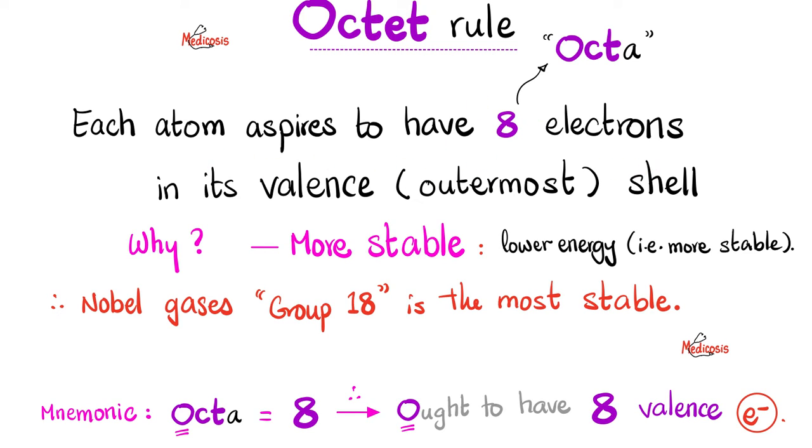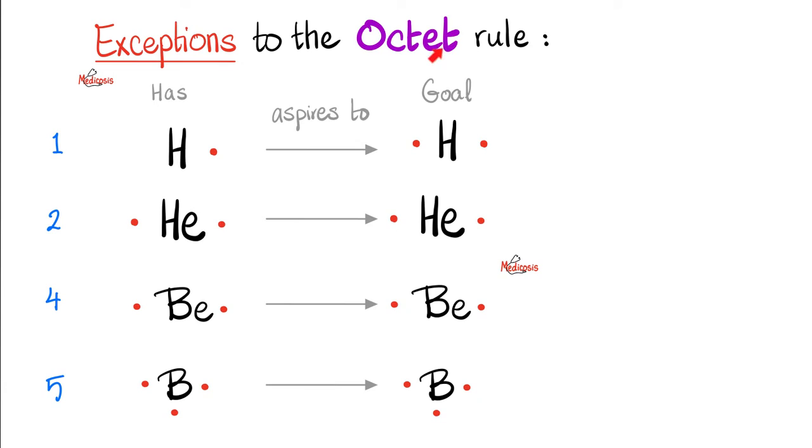So each atom aspires to have eight electrons in the valence shell. Why? Because this is the most stable state. What do you mean? I mean lower energy, which means more stable. Go back to video number one when we talked about entropy. Nature loves low energy states. Why? Because they are more stable and they are easier to maintain. Just remember, octet means eight as in octagon. Do we have exceptions to the octet rule? Of course. Look at hydrogen. It has one valence electron and it aspires to have two. So this is not octet. This is duplet. How about helium? Helium has two valence electrons and it's happy with the two valence electrons. How about beryllium? Beryllium has four electrons in total. Two in the inner shell and two in the outer or valence shell. And beryllium is happy with the two electrons. That's a duplet rule, not octet. How about boron? Boron is a moron. I mean, it's just weird. It has three valence electrons and it's happy with them.